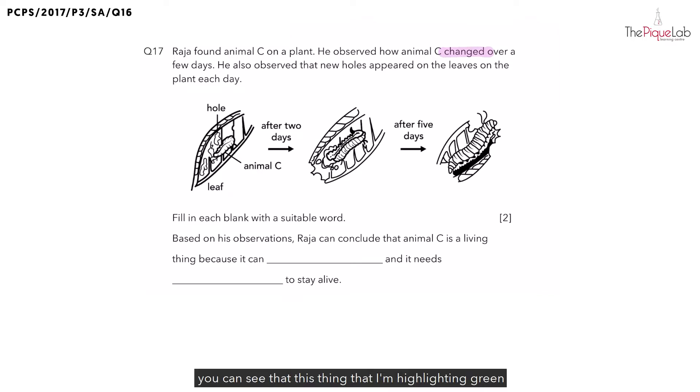On the first diagram, you can see that this thing that I'm highlighting in green is animal C. And you realize after two days, this is how animal C looks like. And after five days, this is how animal C looks like.